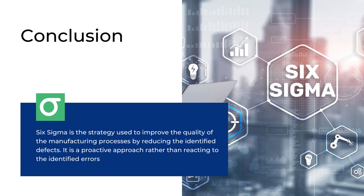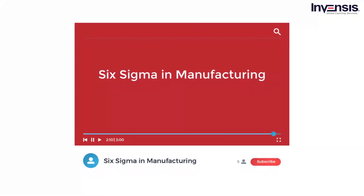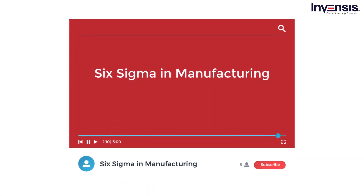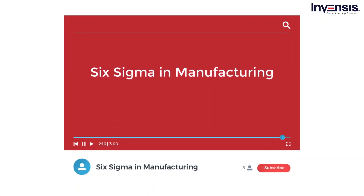Though there are several advantages to Six Sigma implementation in manufacturing, there are some drawbacks. The drawbacks here are mainly based on increased costs due to increased quality. With Six Sigma implementation, the manufacturing industry has foreseen several benefits rather than these drawbacks. With this, we have come to the end of this video. I hope it was helpful.